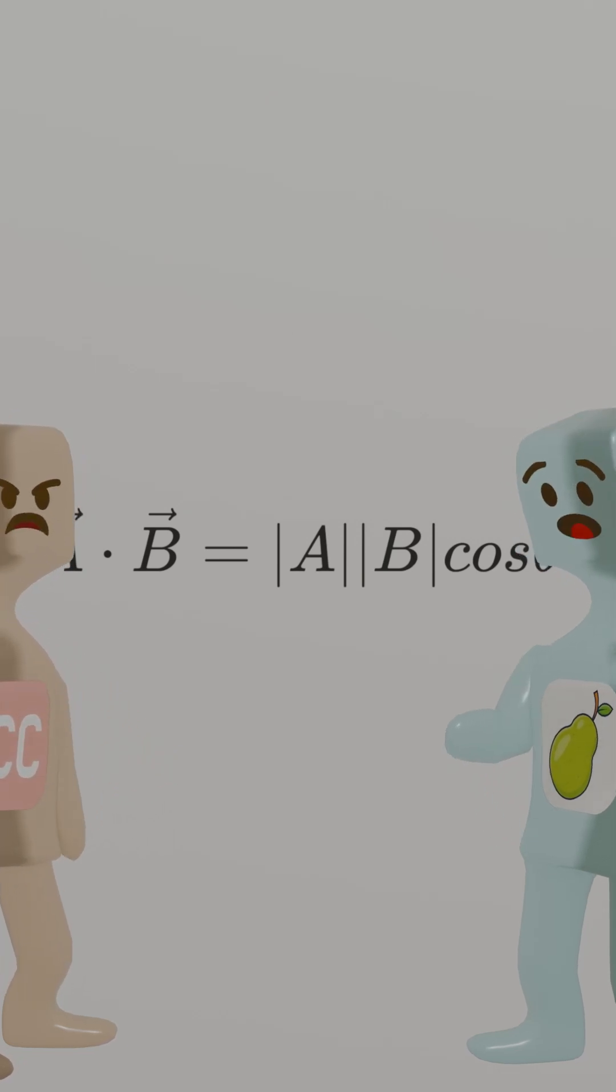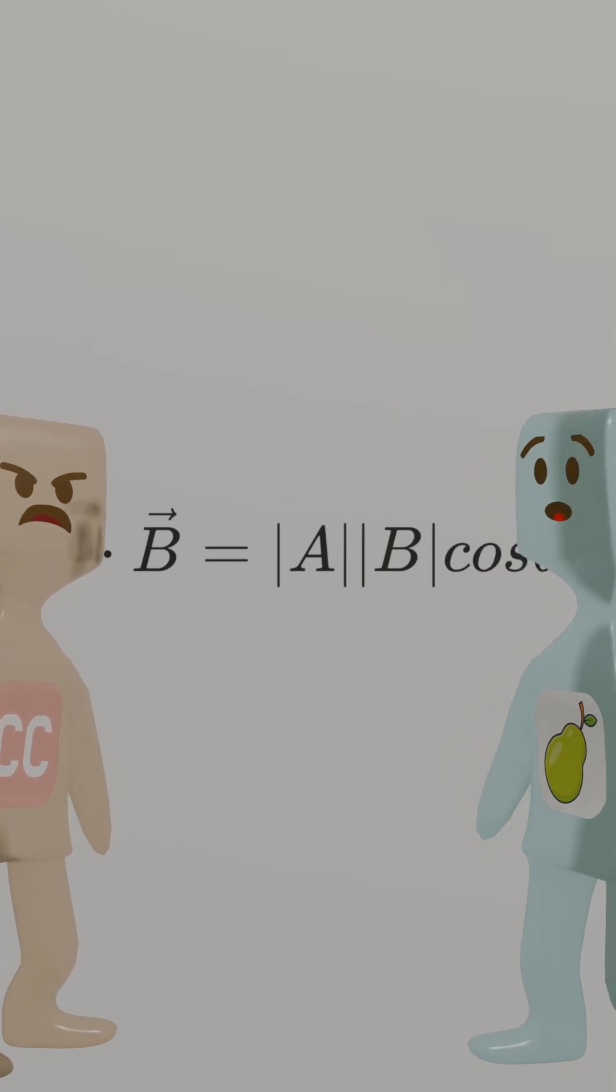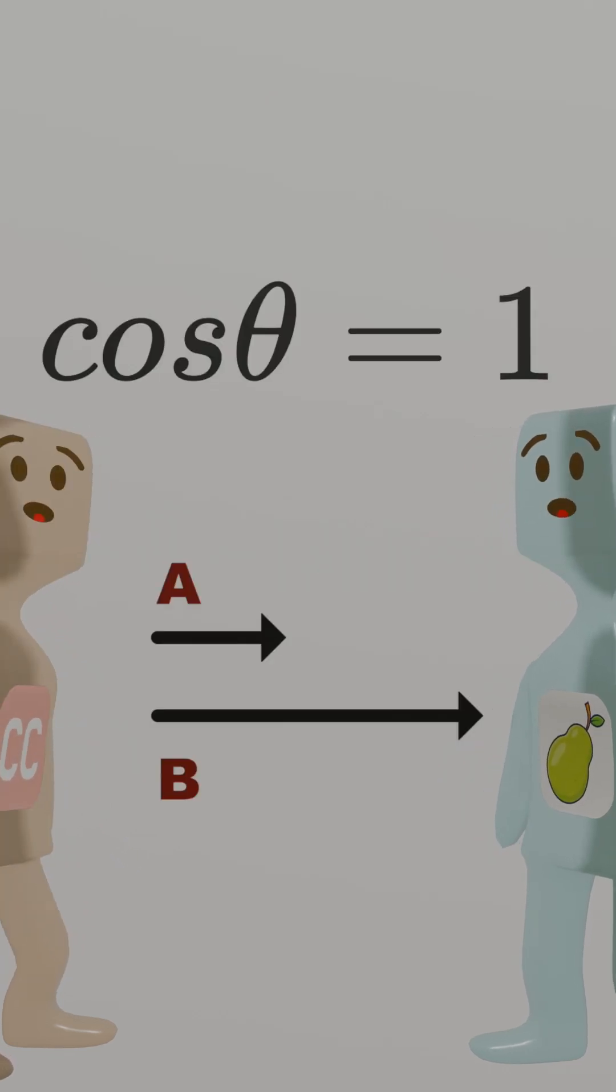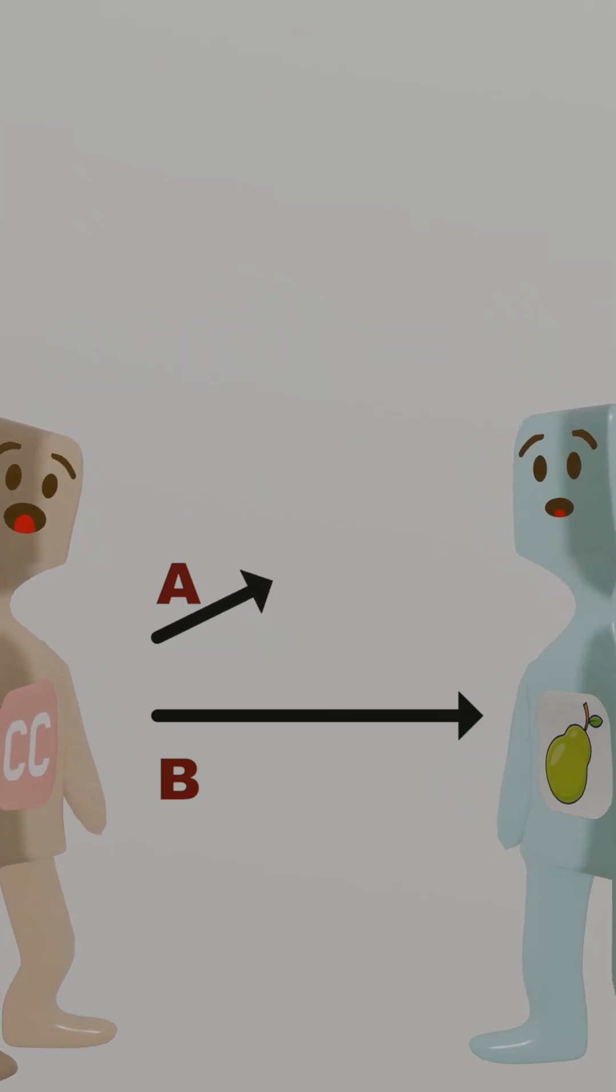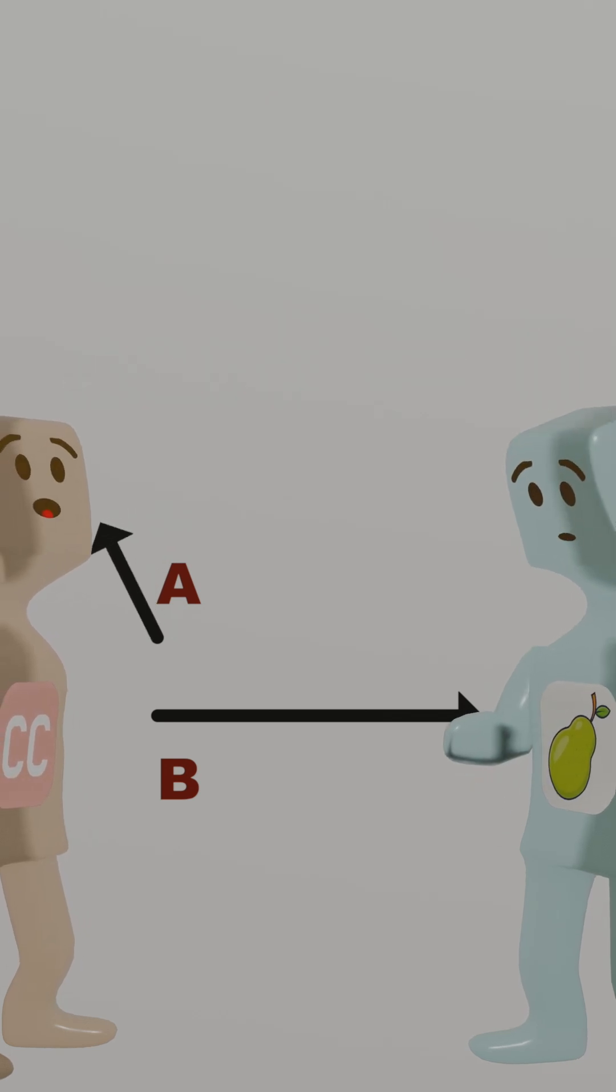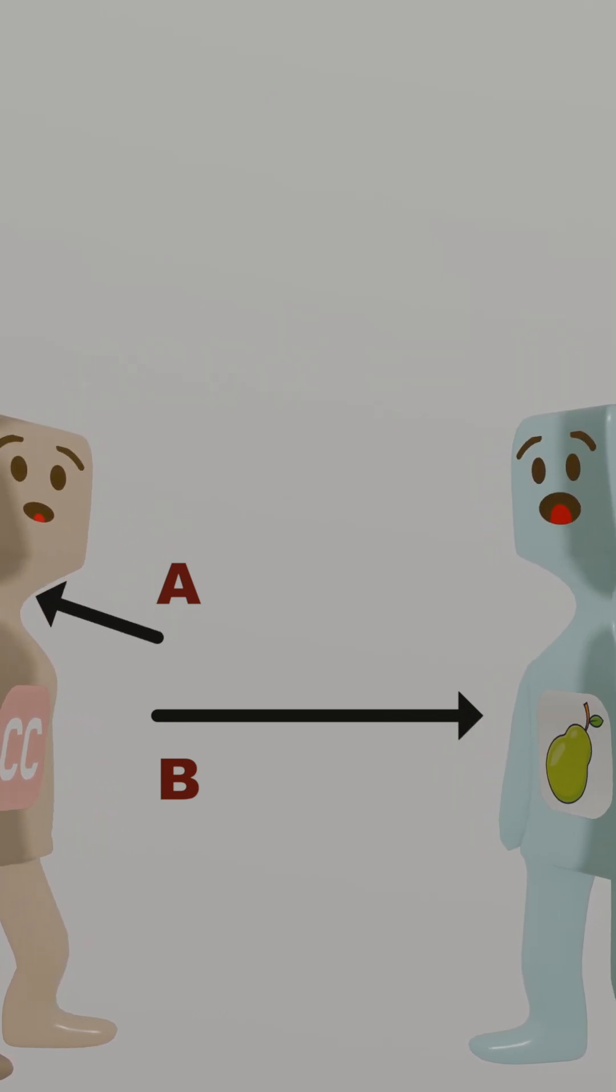What happens to the value of their inner product as we continuously change the angle? Is it true that the closer the directions of A and B are, the larger their inner product value? Precisely. The inner product is the universal language the universe uses to measure how similar two things are.